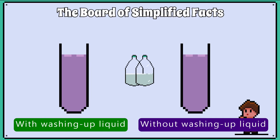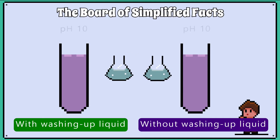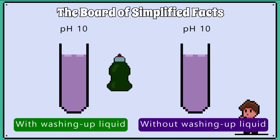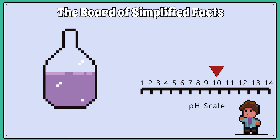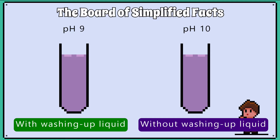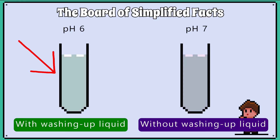We will have two test tubes that each contain milk, sodium carbonate to make it alkaline, and the phenolphthalein indicator, but only one test tube will contain washing up liquid. Phenolphthalein turns pink in an alkaline solution and will go colourless when in neutral to acidic conditions. When we add lipase to both test tubes and observe which one will go colourless first, we should notice that the test tube with washing up liquid goes colourless first.